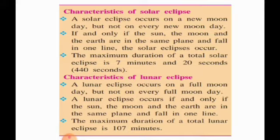Characteristics of lunar eclipse: A lunar eclipse occurs on a full moon day, but not on every full moon day. A lunar eclipse occurs only on a full moon day because at that time the alignment is sun, then earth, then moon, as we have seen in the previous figures. A lunar eclipse occurs if and only if the sun, moon, and earth are in the same plane and fall in one line. The maximum duration of a total lunar eclipse is 107 minutes.